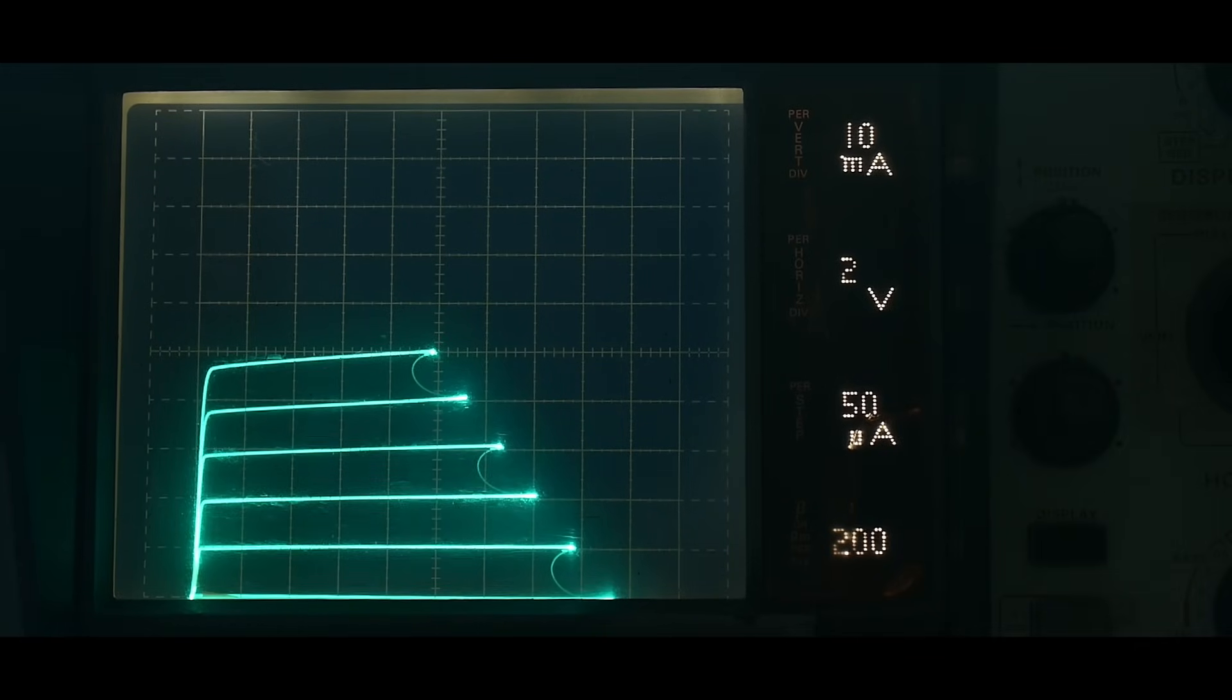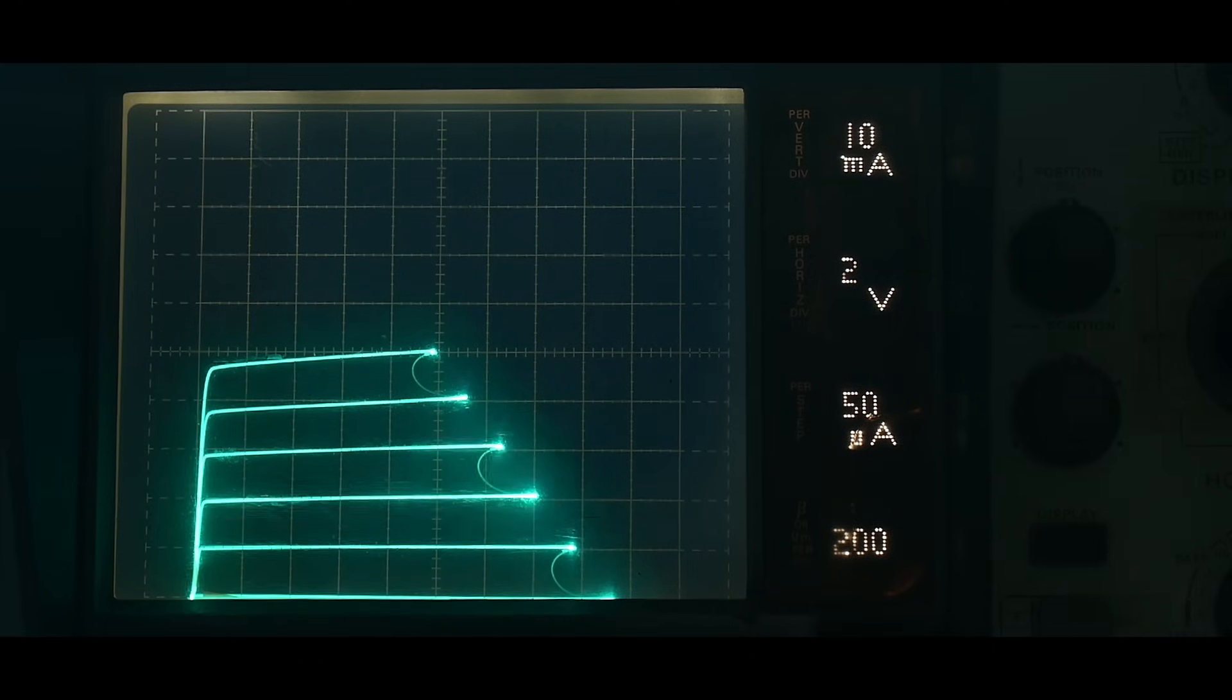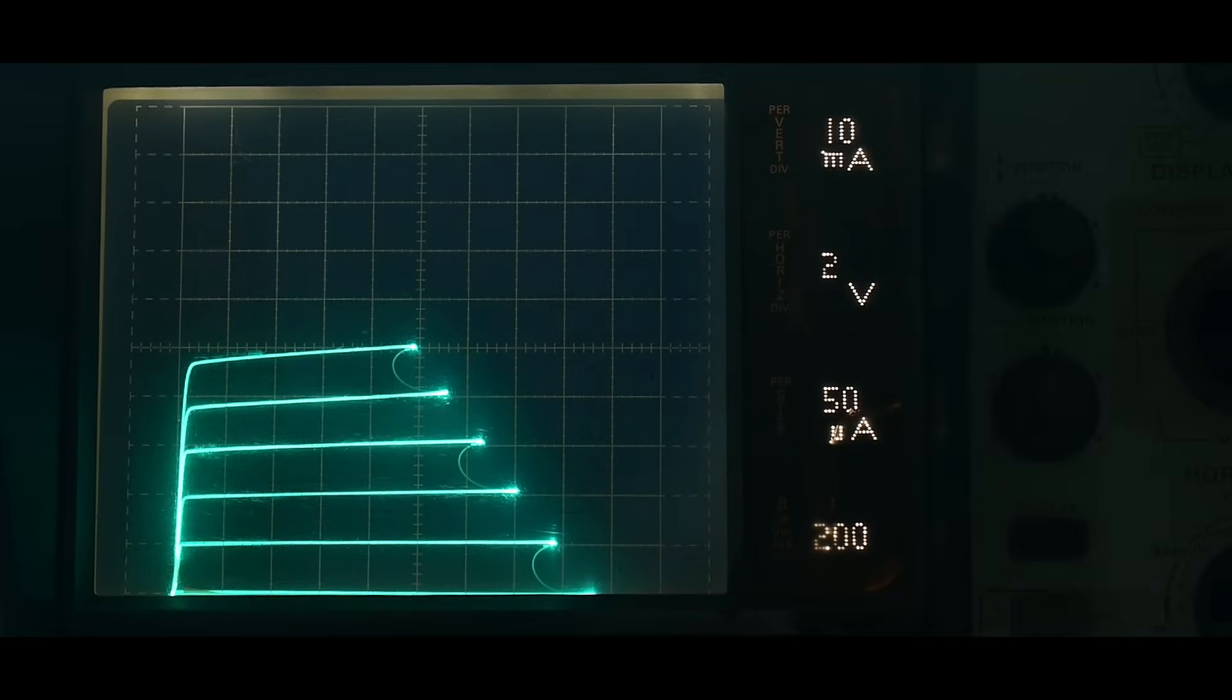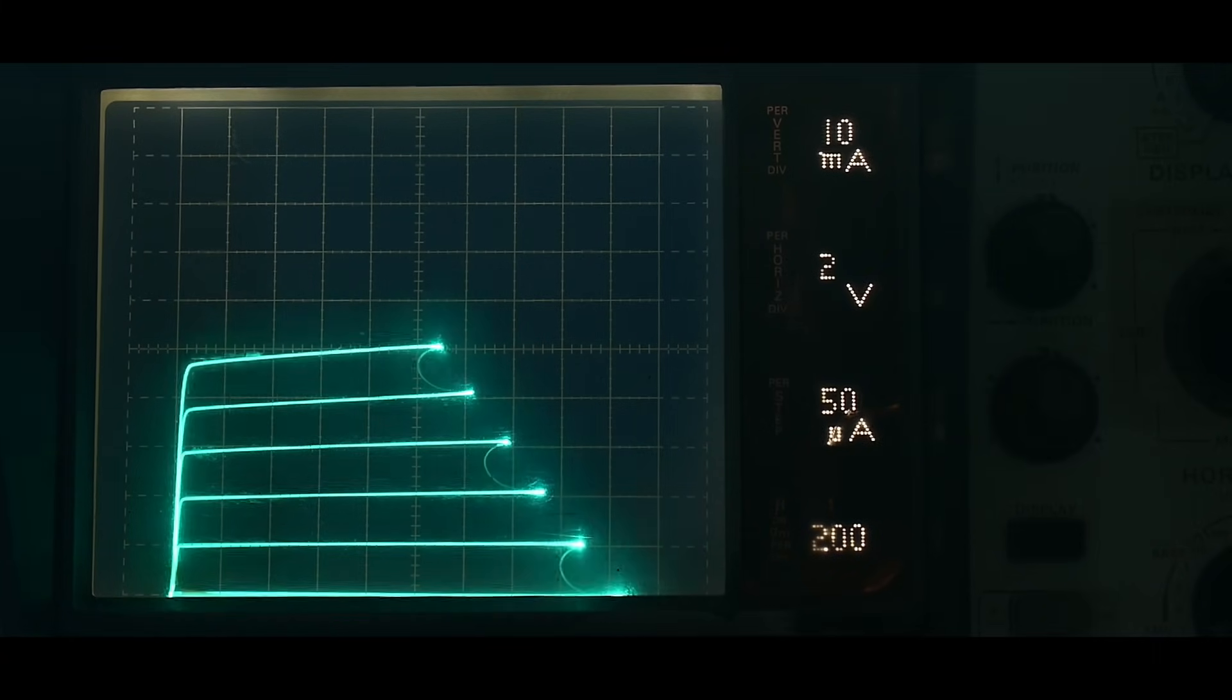This is the PZT model. And so we have 2 volts per division. So 2, 4, 6, 8, 10, 12, 14, 16 volts. And we have 10 milliamps per division in the upper. So 10, 20, 30, 40, 50 milliamps going up. And so, yeah, this looks really, really nice.